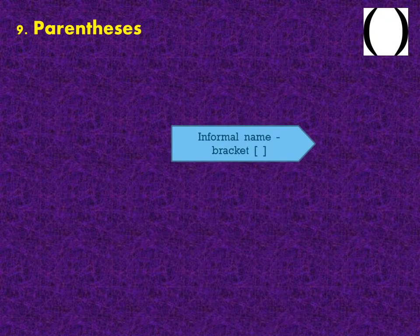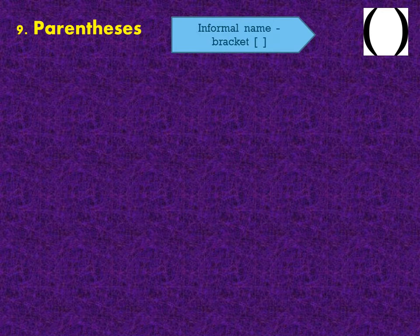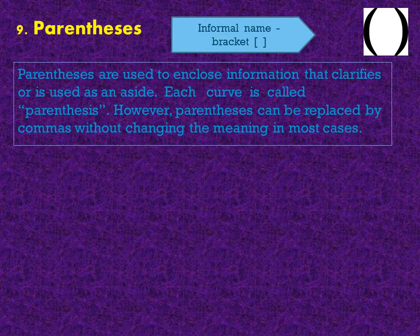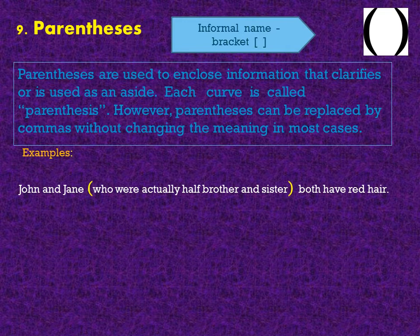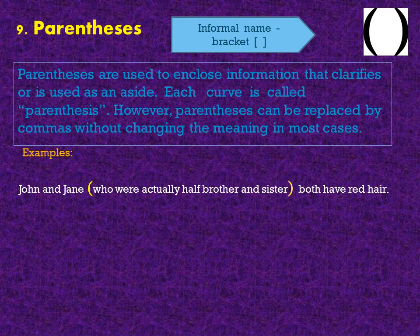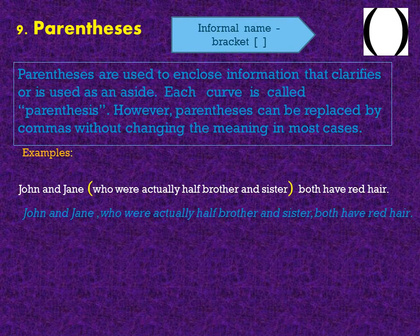Parenthesis — for informal use, we call it bracket. Parentheses are used to enclose information that clarifies or is used as an aside. Each curve is called a parenthesis. However, parentheses can be replaced by commas without changing the meaning in most cases. For example: John and Jane (who were actually half-brother and sister) both have red hair. We can also write it like this: John and Jane, who were actually half-brother and sister, both have red hair.